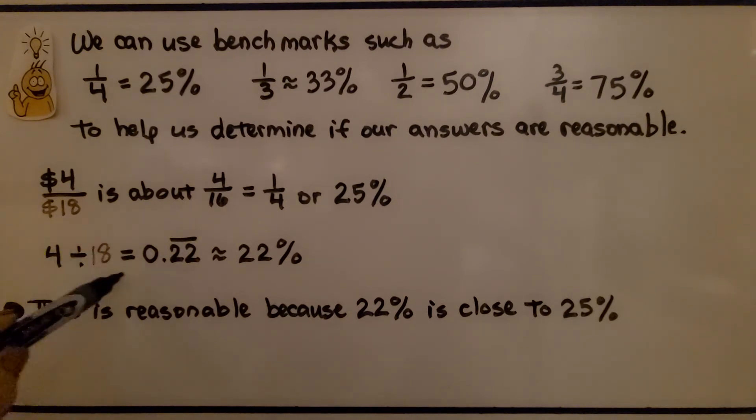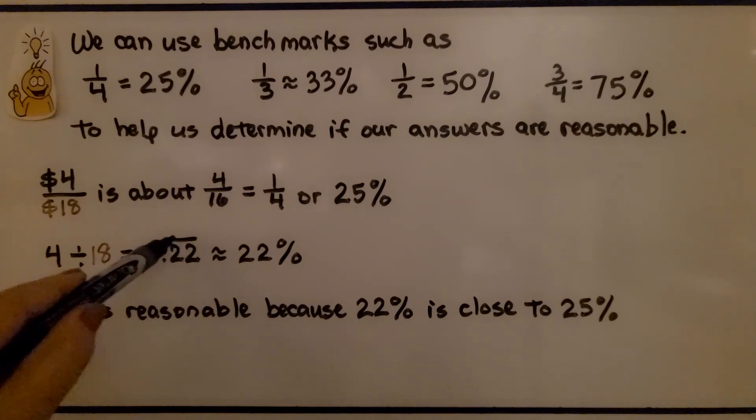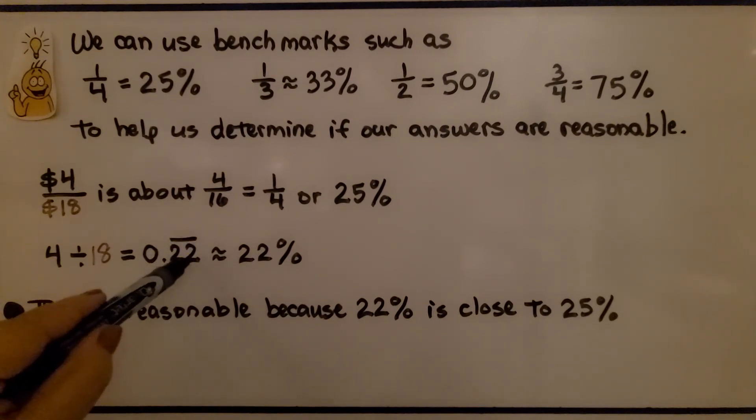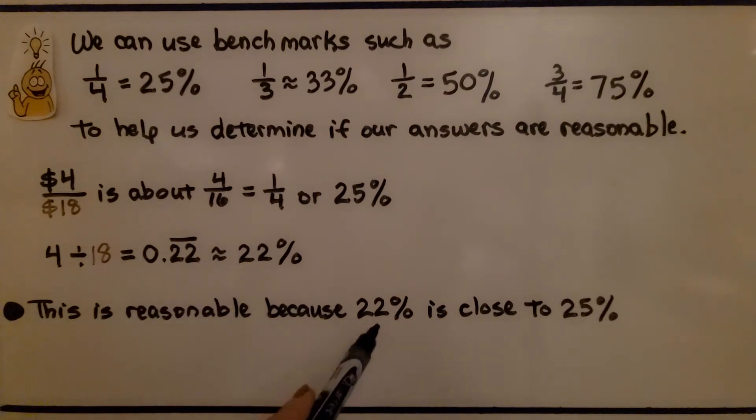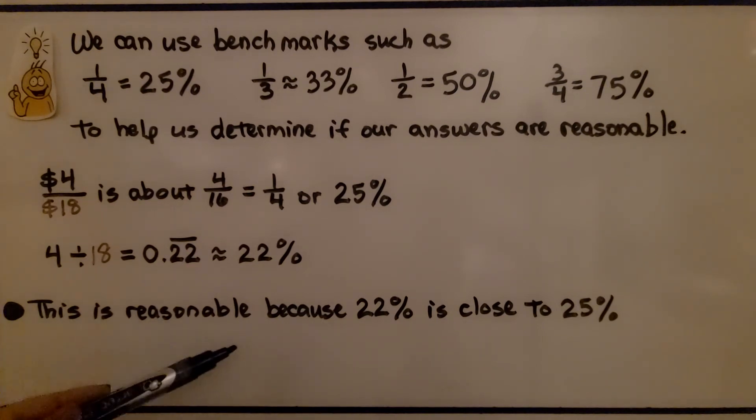Four divided by 18 is equal to 0.222222. We drew the bar over the top and stopped it at the hundredths place, which is approximately 22%. This is reasonable because 22% is close to 25%. So we know our answer of 22% is reasonable. It makes sense.